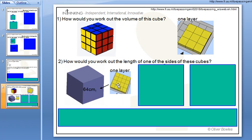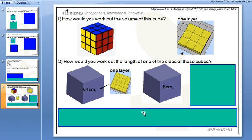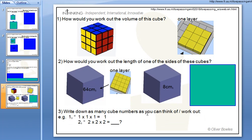If you know the volume, how would you find the side length of one of these cubes? And remember a cube is a 3D square. What about this one? And then can you list all the cube numbers you can think of?